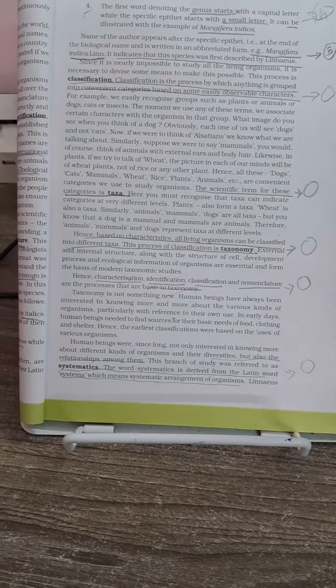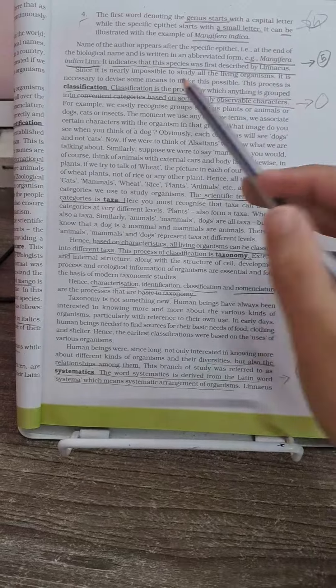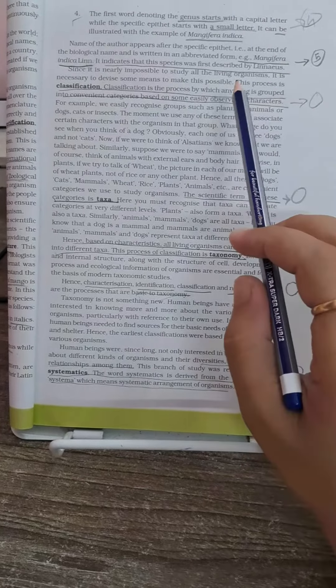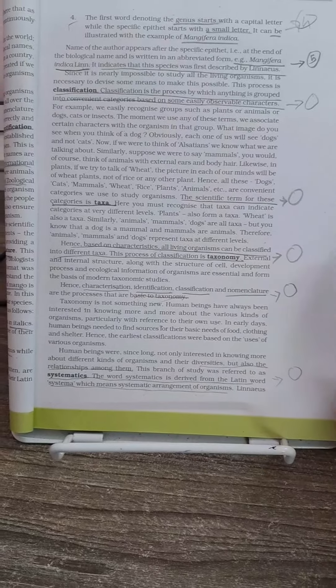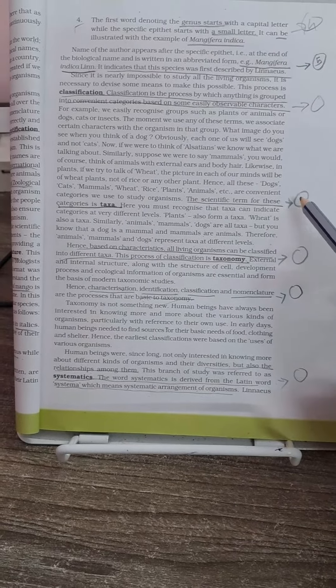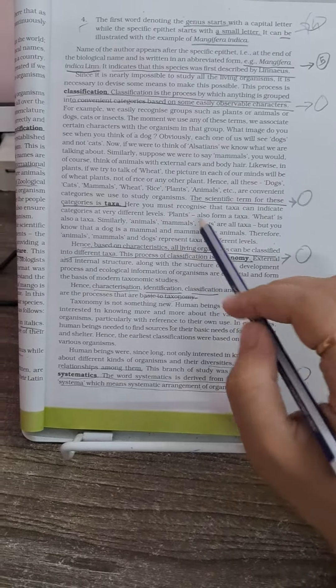Next potential MCQ is from the definition of classification. You have to be very clear about the definition of classification, and later the difference between taxa and taxonomy. You have to be very clear.